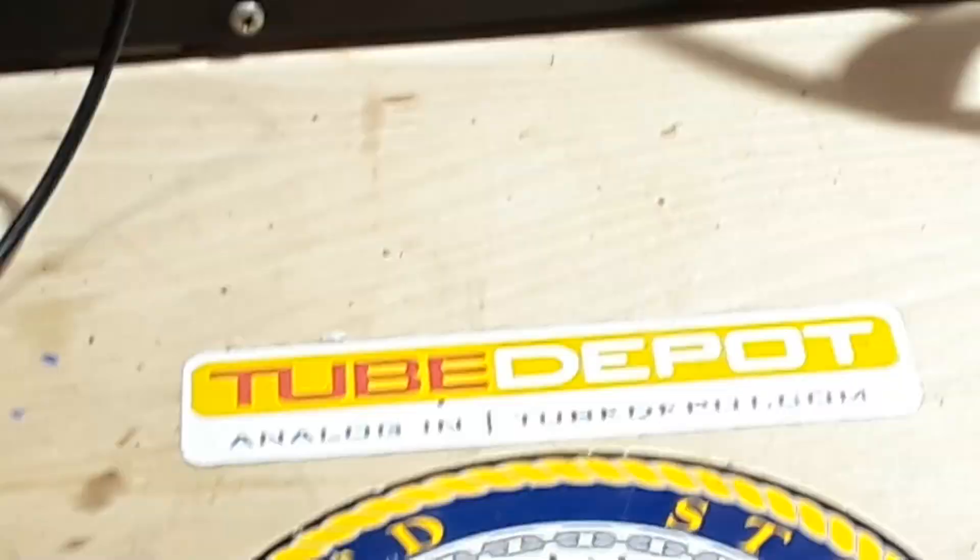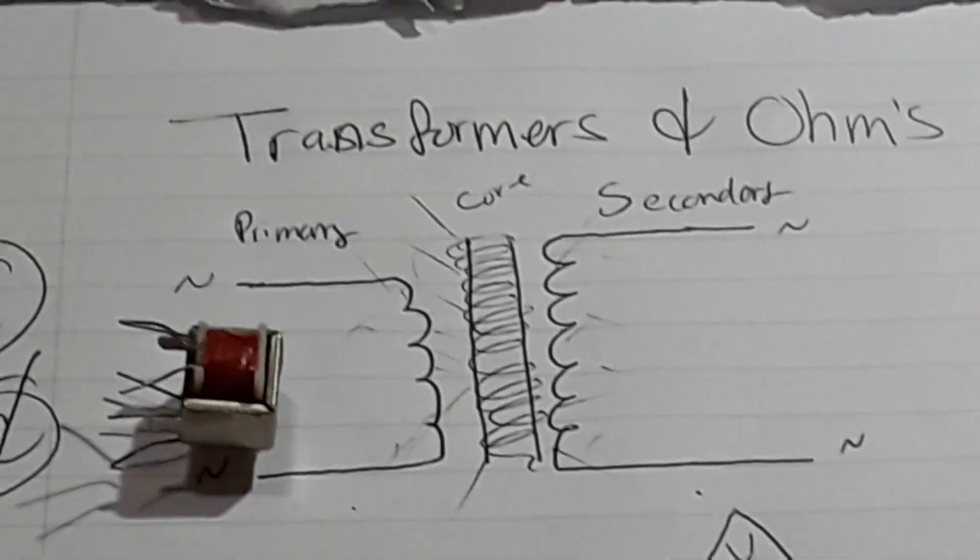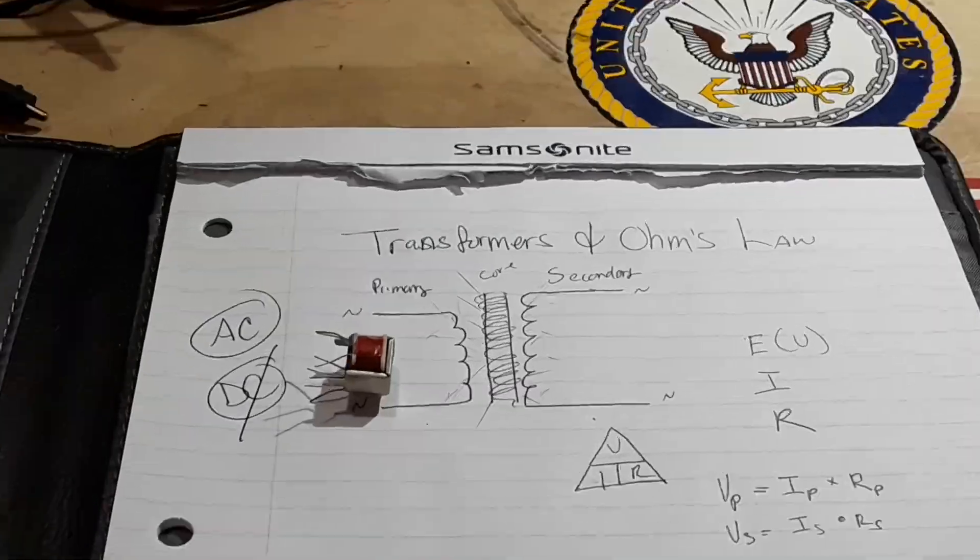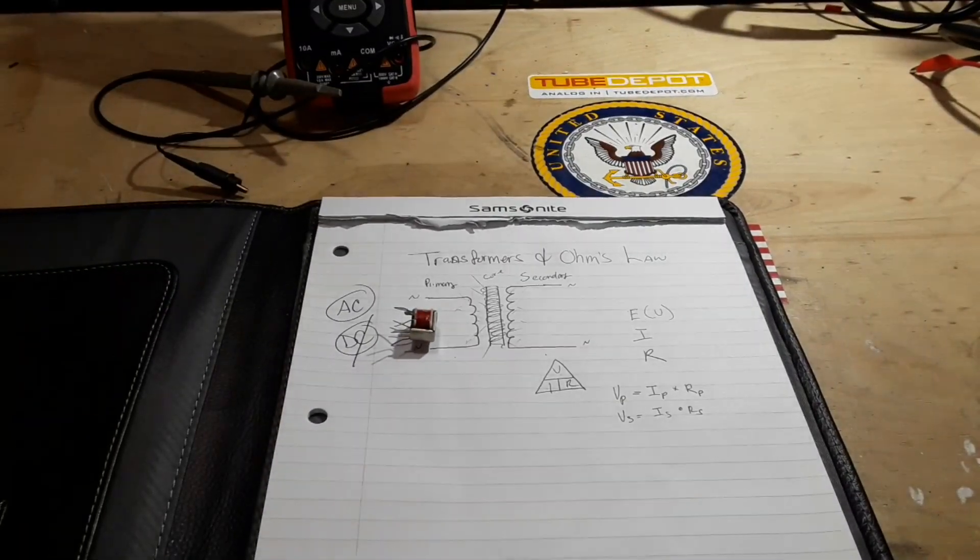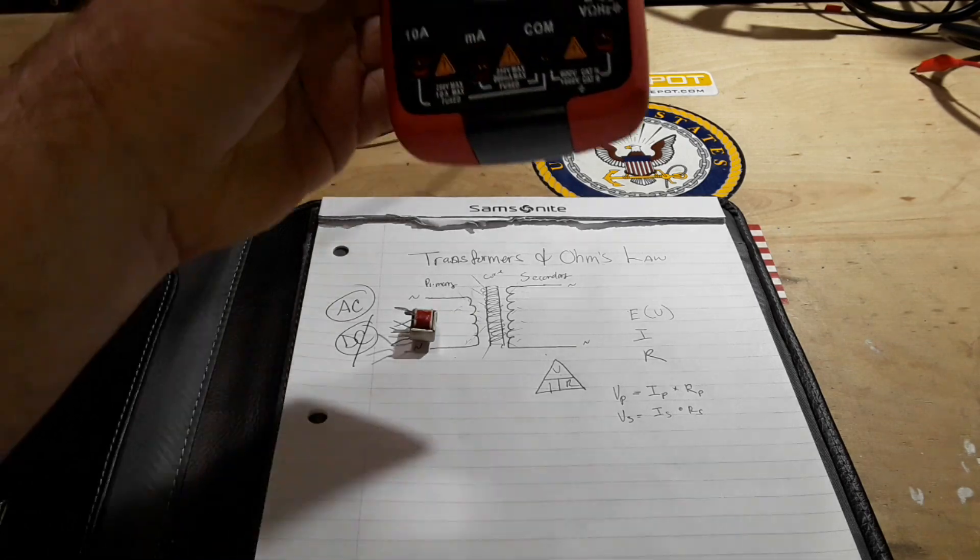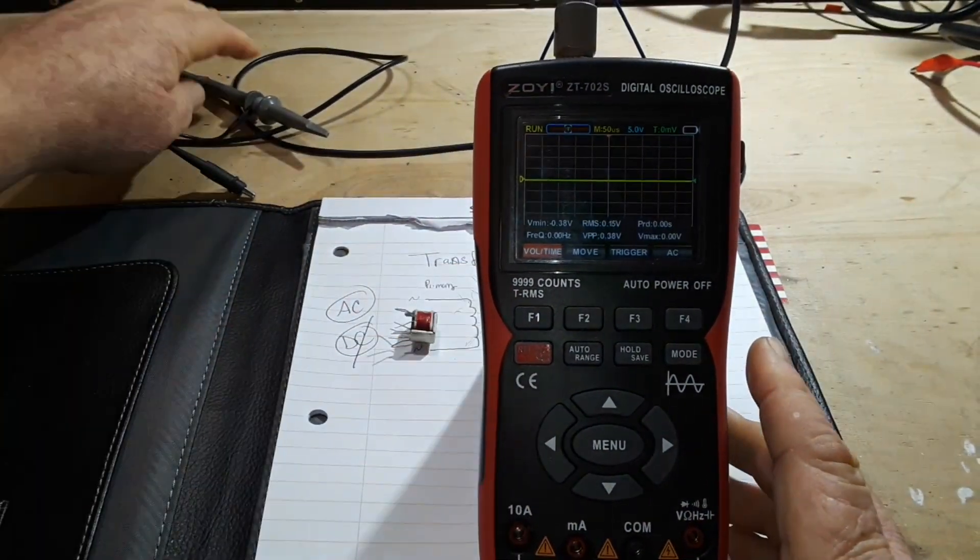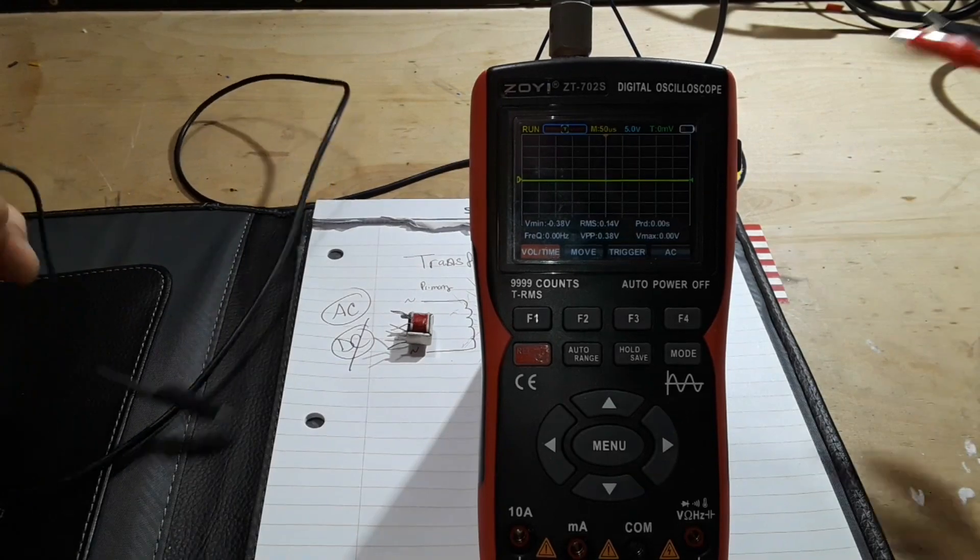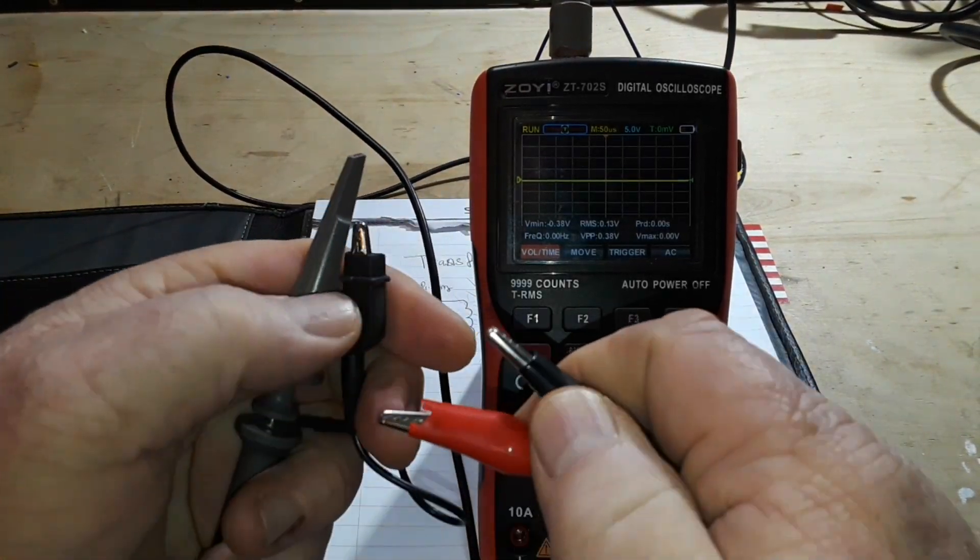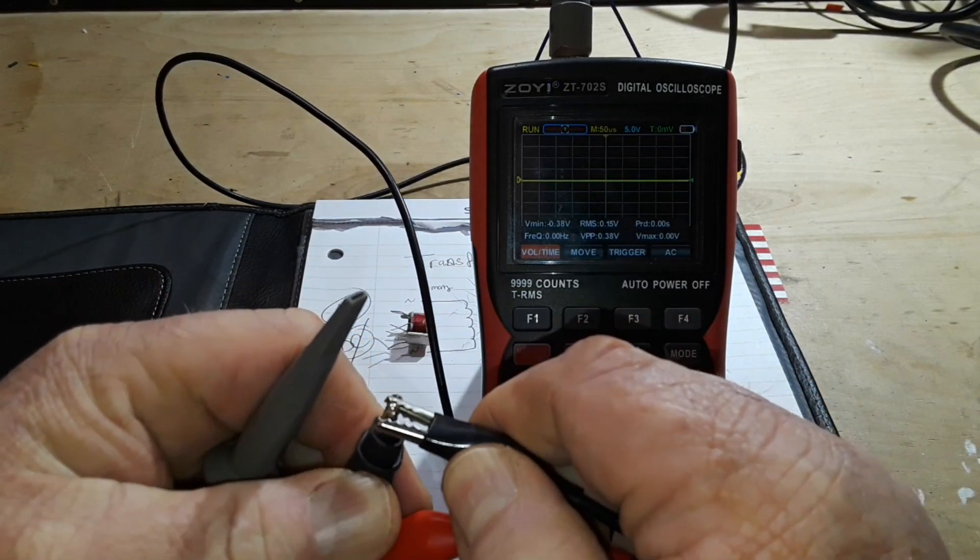All right. So let's go back down here to where we have our transformer. And I'm going to zoom out here. And we're going to bring in the little tiny oscilloscope, the ZOE. Now, just to show you what's coming out of the signal generator, I will connect it up to the oscilloscope probe